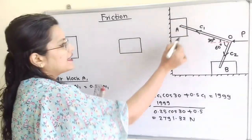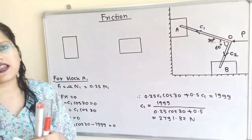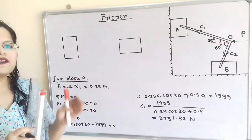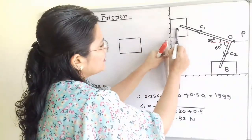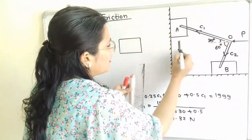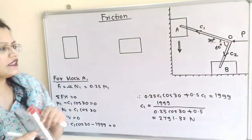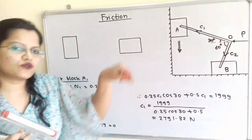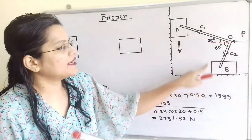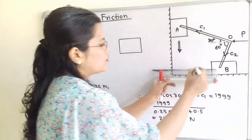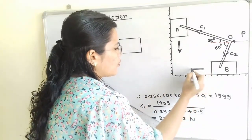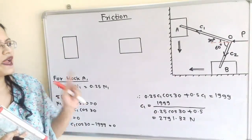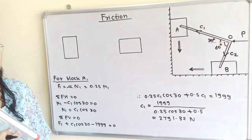Block A is placed on a vertical surface and is on the verge of moving in the downward direction. The link AOB has its force direction towards block B, so block B is on the verge of moving towards the left-hand side. We will now draw the free body diagram to find out the magnitude of the applied force P.